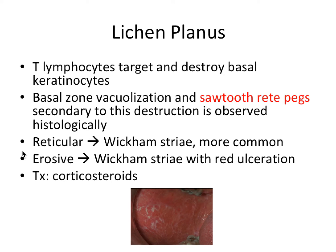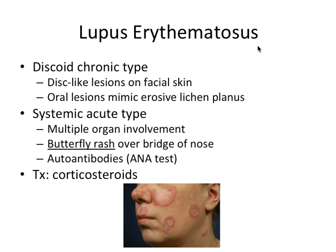There are two common forms. The first is reticular, which involves white lacy Wickham's striae — ribbon-like, net-like white stripes. Reticular is the more common form, and erosive is probably the second most common. The erosive form also has Wickham's striae but with the addition of red ulcerations surrounding the white lacy lesions. Treatment is with corticosteroids.